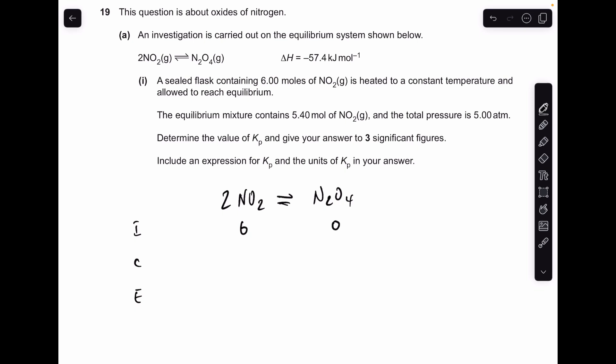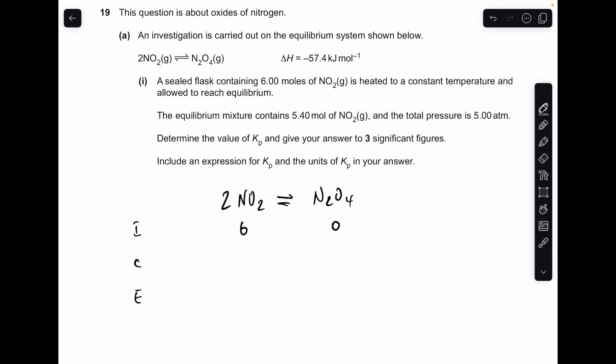The equilibrium mixture contains 5.4 moles of NO2. So I'll just stick 5.4 down there. So that means there's been a drop in moles of the NO2, a very small drop of 0.6.